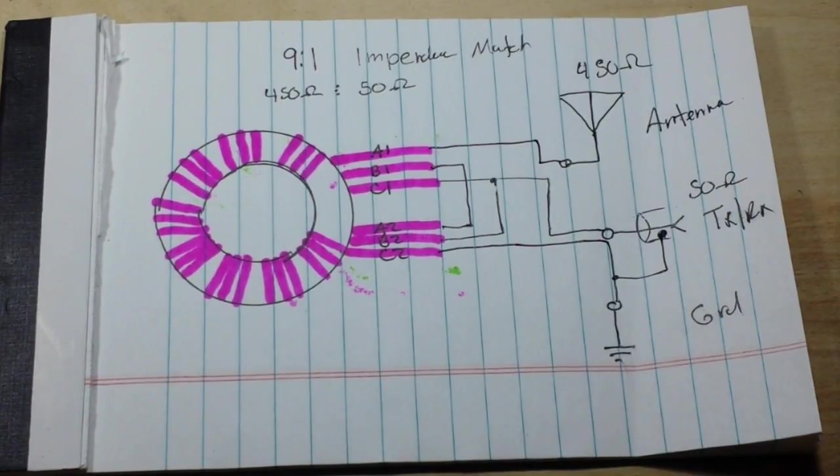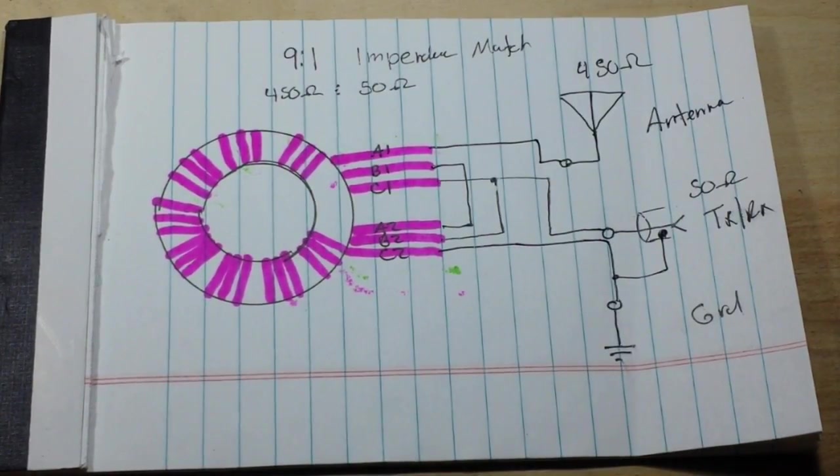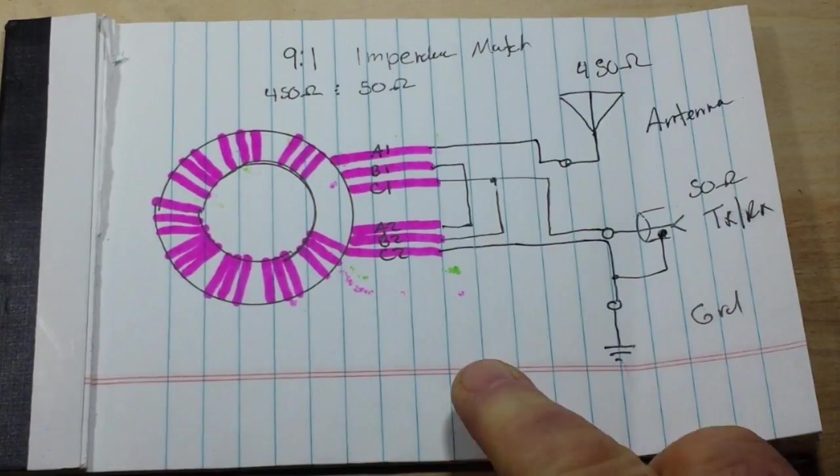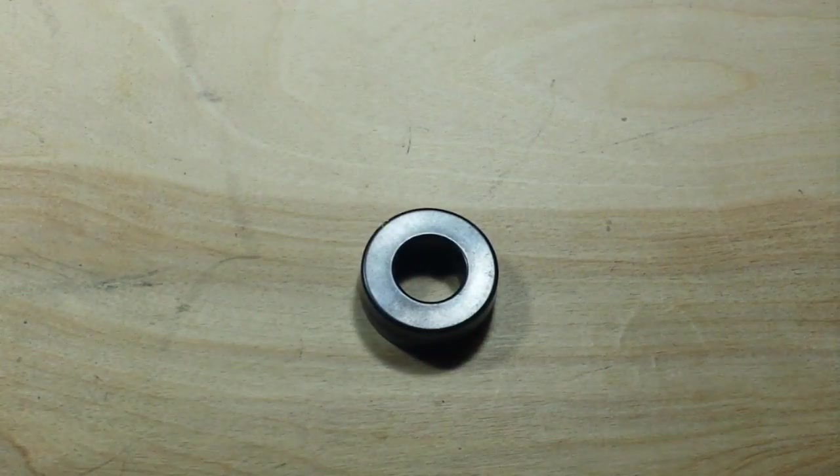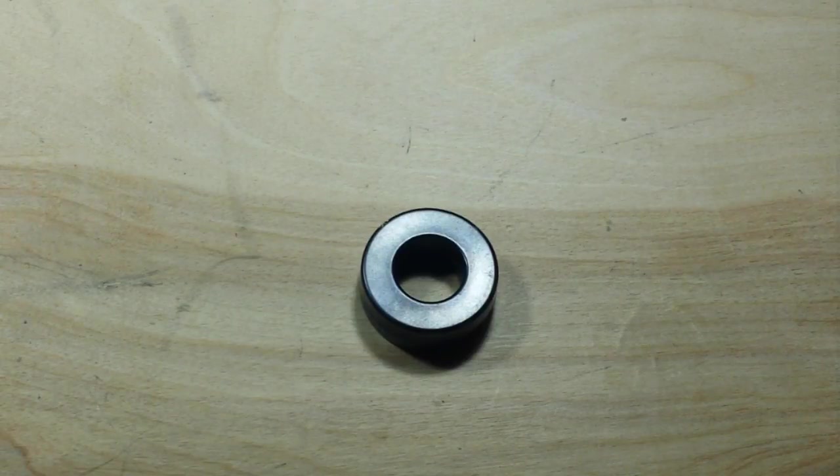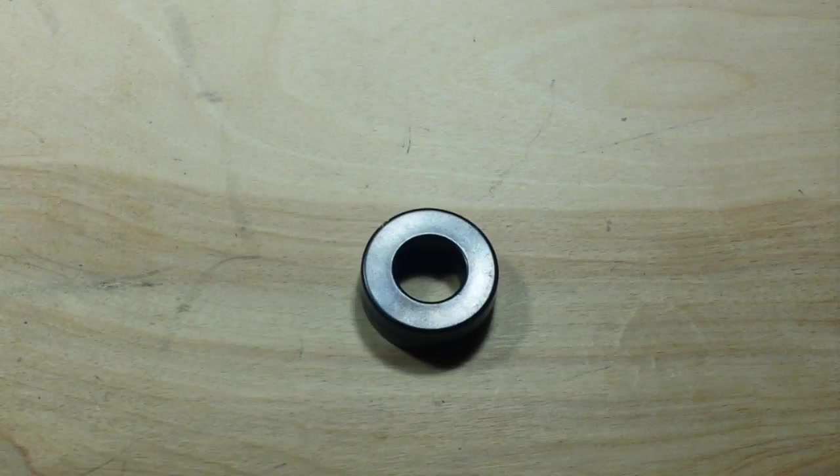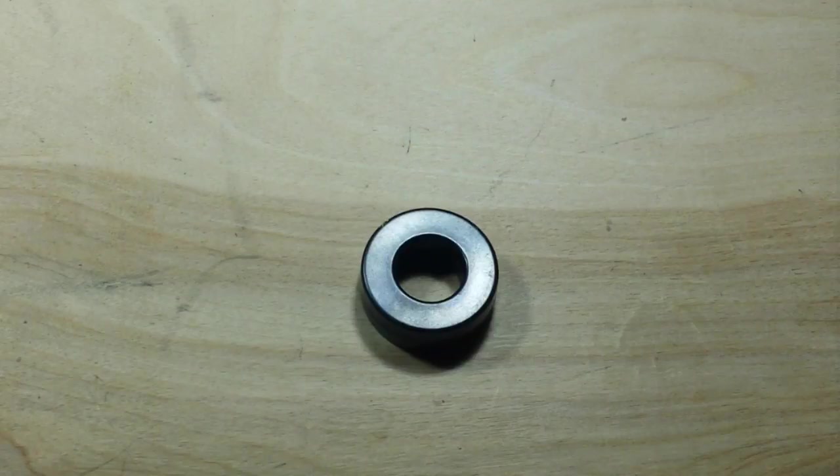But that is how we're going to wind our 9:1 auto transformer. Now we're going to use a toroid like we talked about yesterday, and we need to use three separate pieces of wire. I'm going to do them different colors just to make it easy on myself.